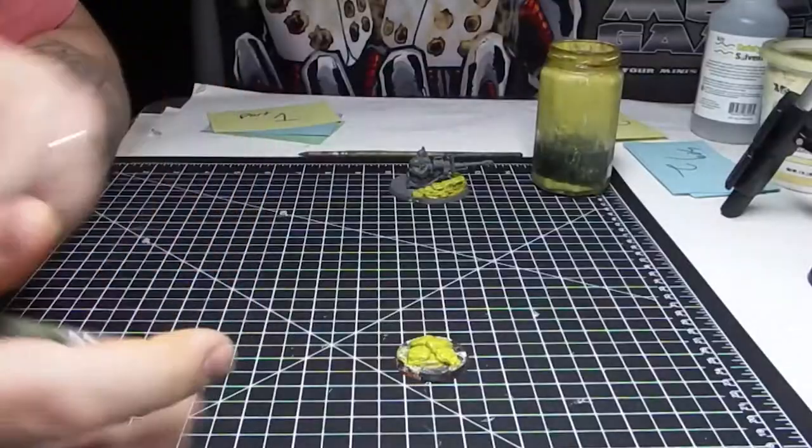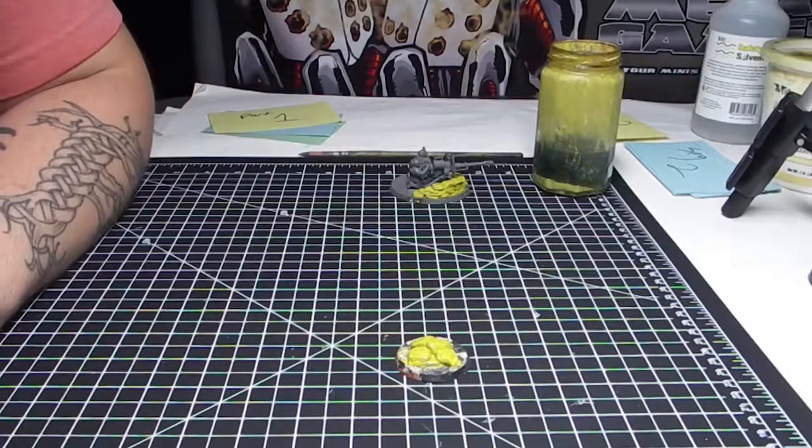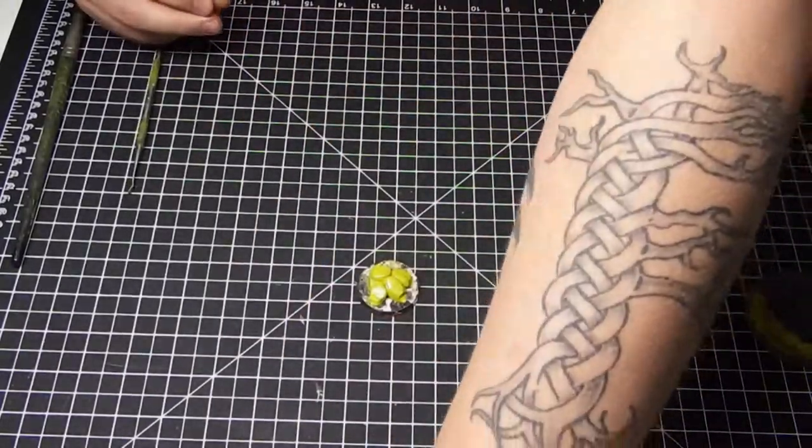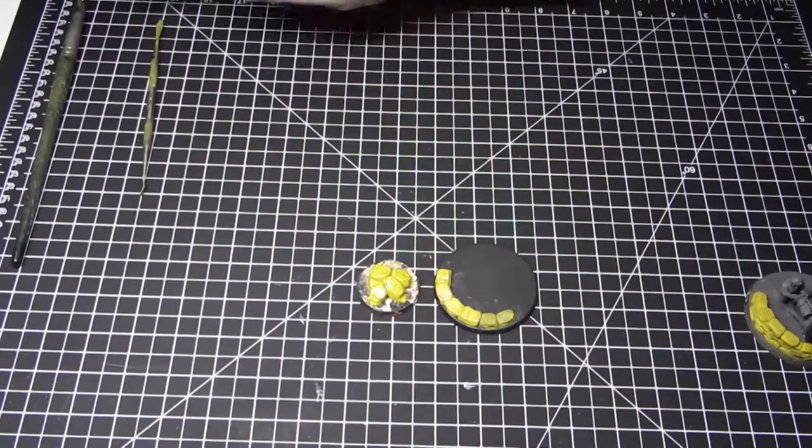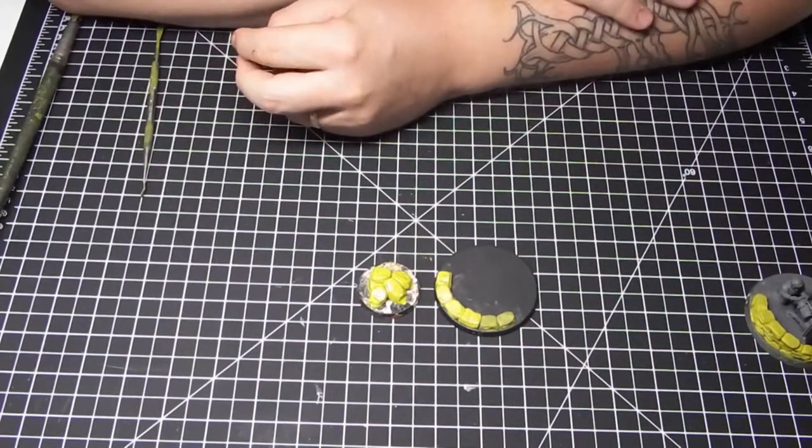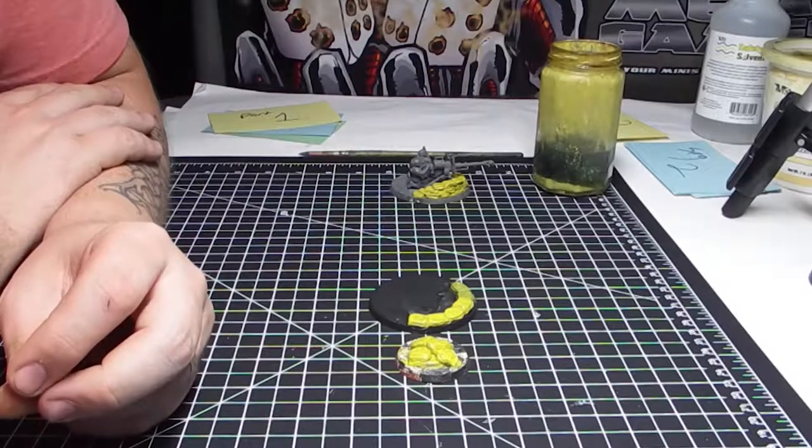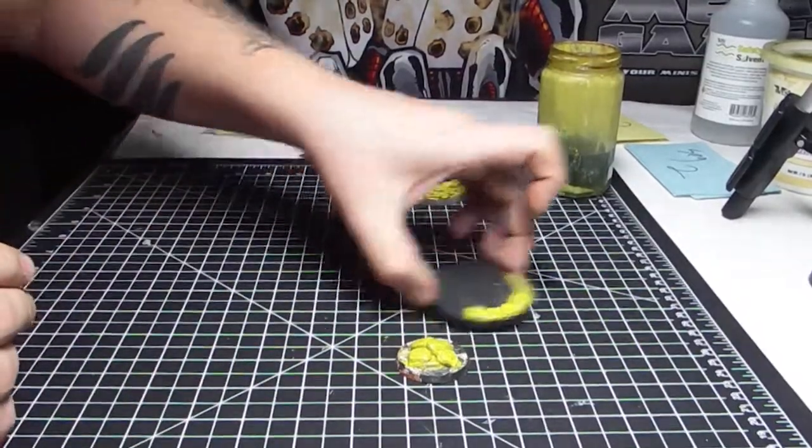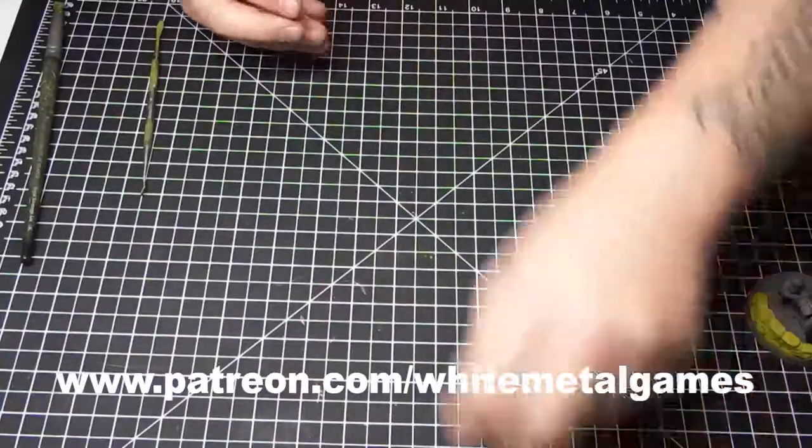So if you have leftover green stuff at any point, there are lots of different things you can do with it. Don't throw it away. Even as it hardens, you can do something fun with it in preparation for future projects. I hope you've enjoyed this cheat code and that this helps you to use some of your leftover green stuff.